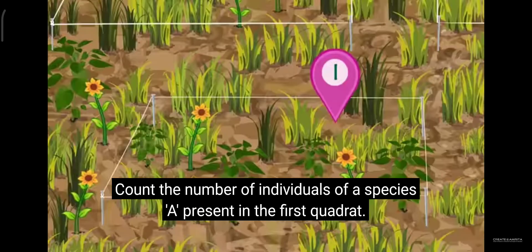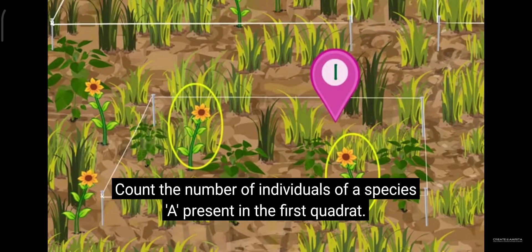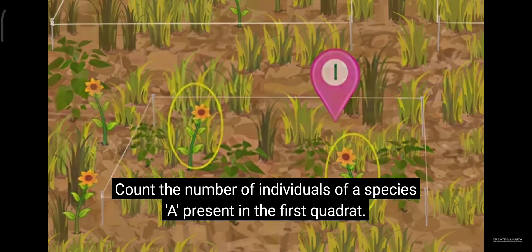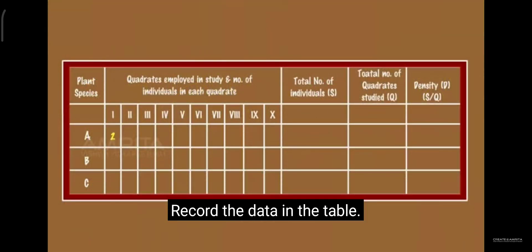Count the number of individuals of a species A present in the first quadrate. Record the data in the table.